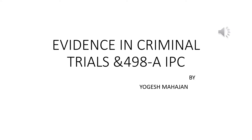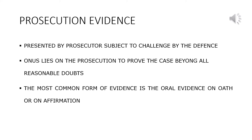This video is about English origin based on evidences in criminal trials and IPC. Prosecution evidence refers to those evidences which are led by the prosecutor, and these are subject to challenge by the defense. The onus of proof lies only on the prosecution — it is the prosecution who must prove that the crime has been committed by the accused. The most common form of evidence is oral evidence, where witnesses depose before the court verbally in the witness box.